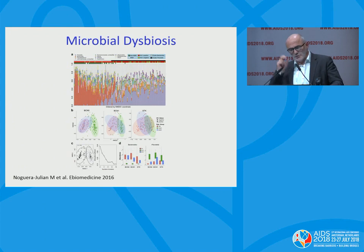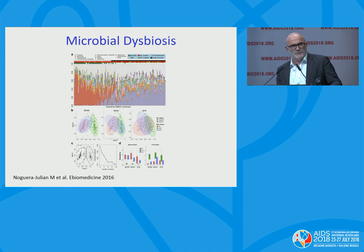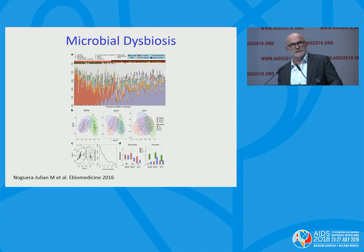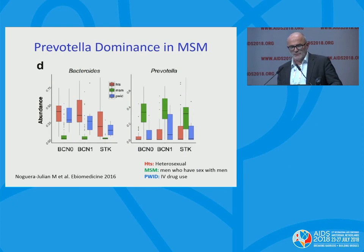This is data from Roger Perreda's group in Barcelona. They looked at a very interesting cohort of MSM where they did a careful 16S ribosomal RNA characterization of the microbiome. They looked at HIV-infected MSM and also had a second cohort in Stockholm. They looked at heterosexual HIV-infected men, people infected via drugs, and looked at the rectal microbiome. They saw clear differences in the rectal microbiome linked essentially to sexual practices. Within the MSM who were HIV-infected, there was a predominance of Prevotella species compared to the dominance of the more conventional Bacteroides family in non-MSM populations.